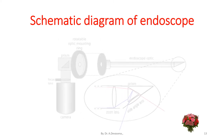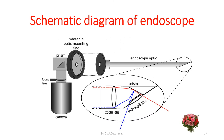In this diagram we are seeing the camera, focusing lens, prism, rotating table, and optic mounting ring. In detail, the optic mounting ring comprises the endoscopic optic. At the tip of the endoscope optic, we are seeing the prism and the zoom lens in detail.